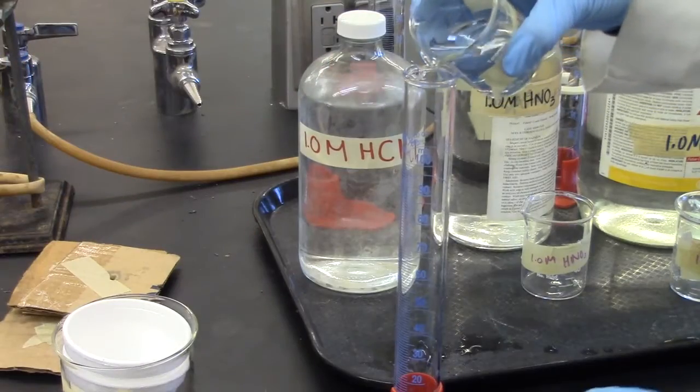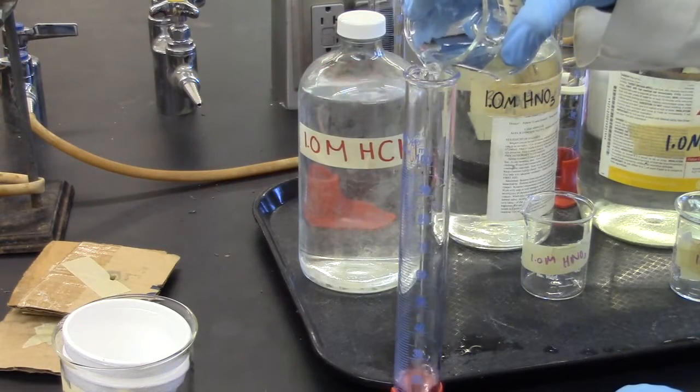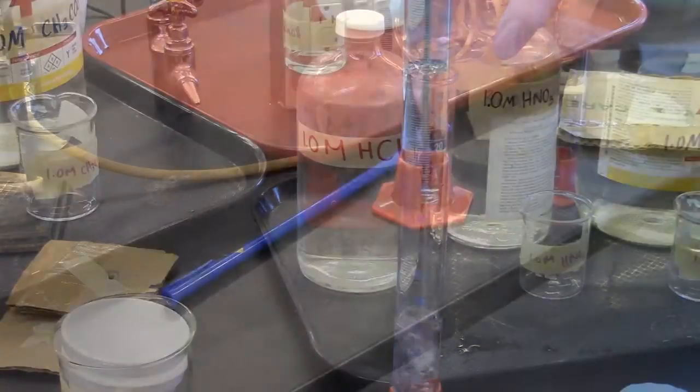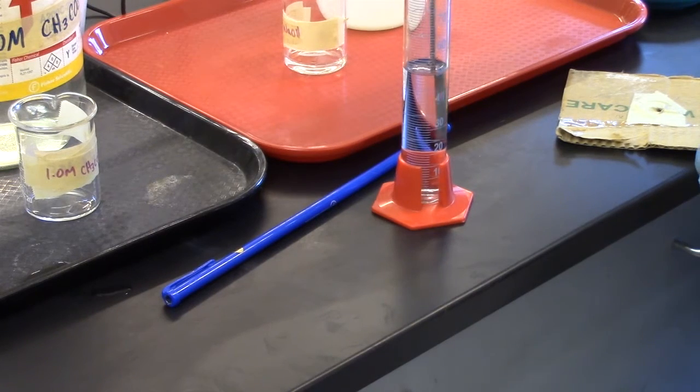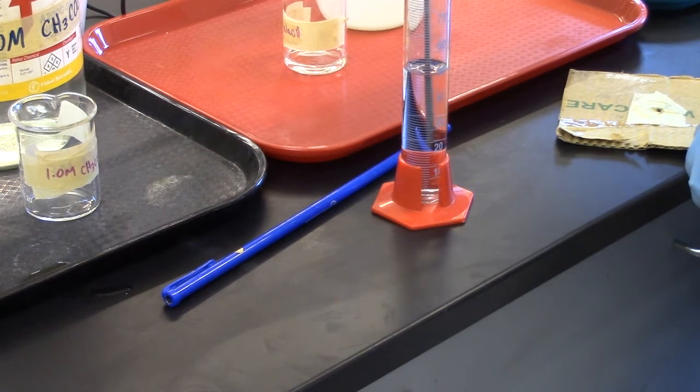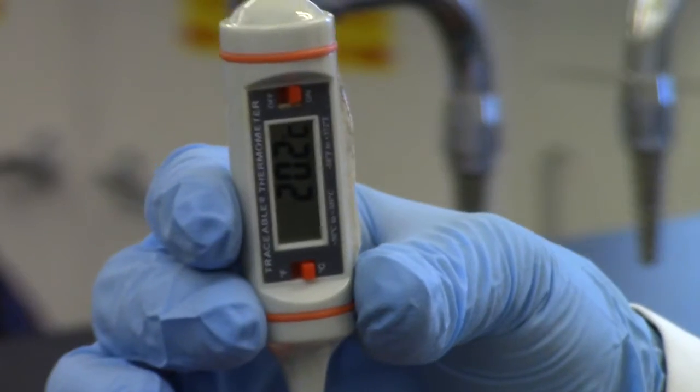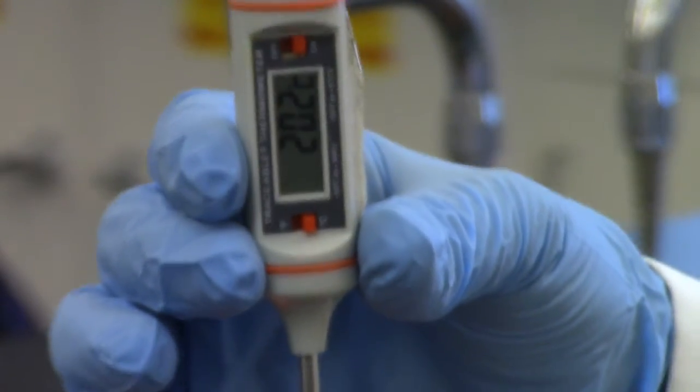Next, measure out 50 milliliters of hydrochloric acid. Take the temperature of the sodium hydroxide solution, and that will be your initial temperature.